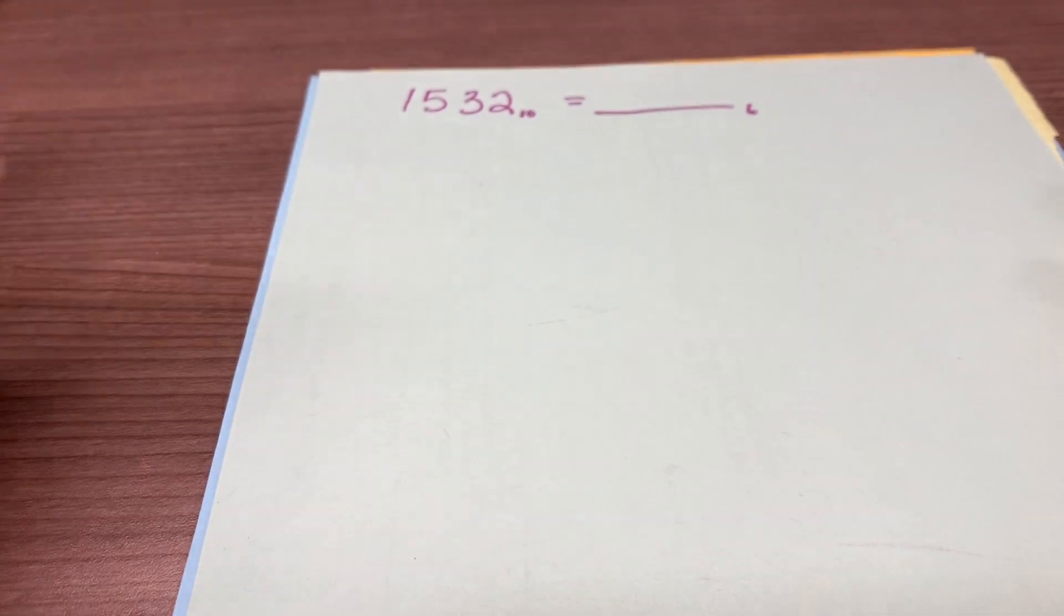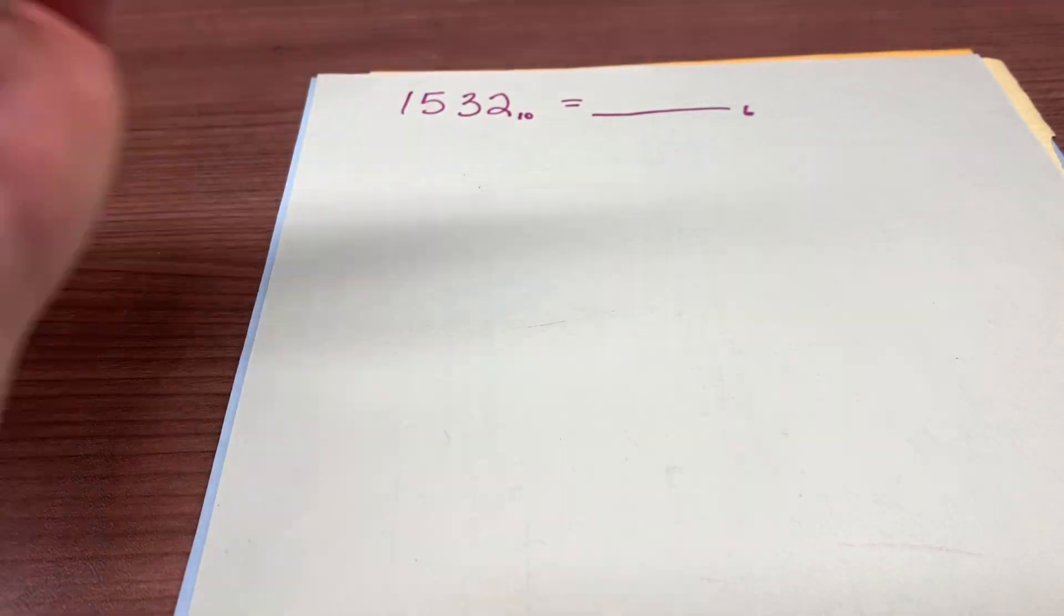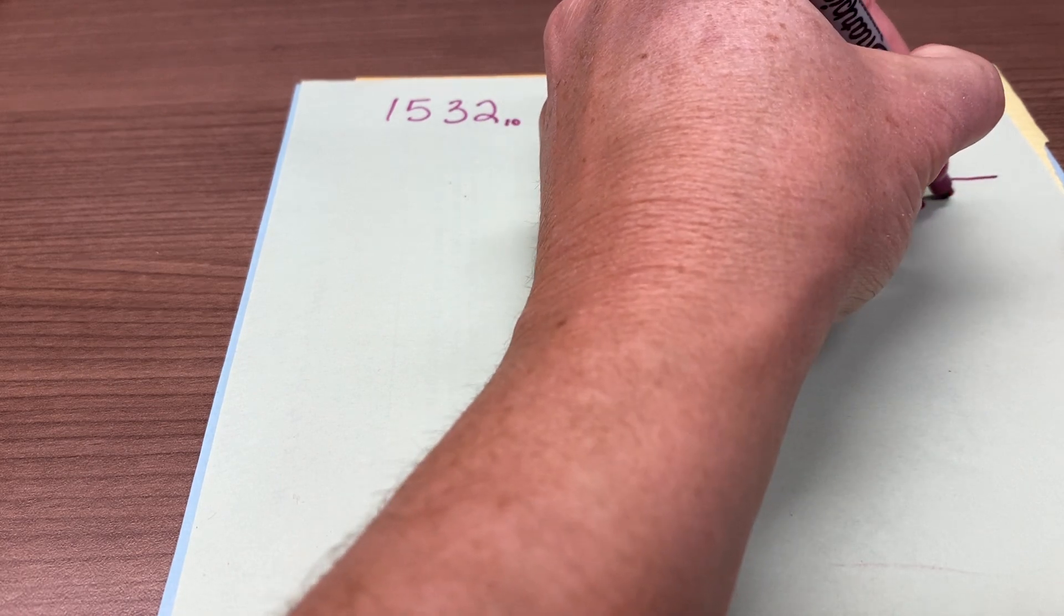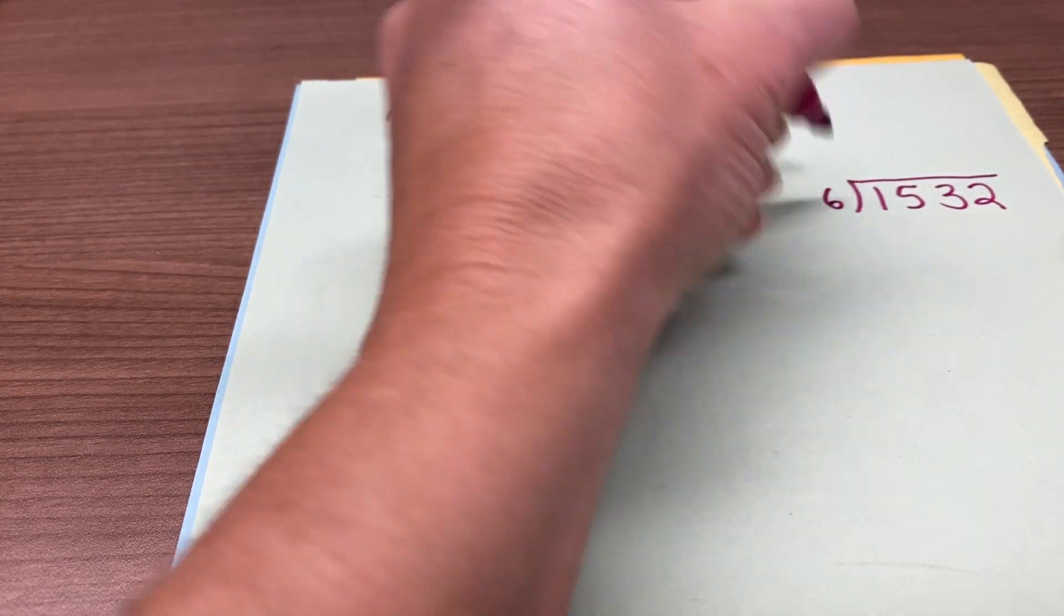Alright, fantastic new way to change numbers from base 10 into any base you choose. So in this case, we're doing a base 6 example. So we're going to take our number, 11532 in this case, and divide it by 6.